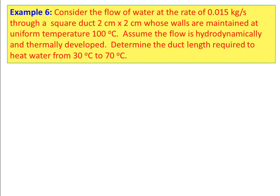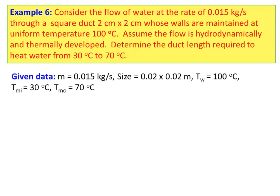Example number 6: Consider the flow of water at a rate of 0.015 kg/s through a square duct of 2 cm × 2 cm size whose walls are maintained at a uniform temperature of 100°C. Assume the flow is hydrodynamically and thermally developed. Determine the duct length required to heat the water from 30°C to 70°C. The mass flow rate is 0.015 kg/s, the duct size is 0.02 m × 0.02 m, wall temperature is 100°C, inlet temperature is 30°C, and outlet temperature is 70°C.